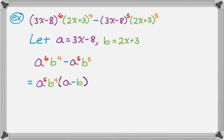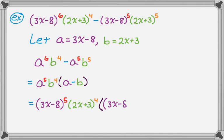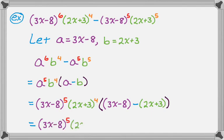Now I want to go back to the original, because a was really 3x minus 8 and b is really 2x plus 3. I replace every a and b with those values — always in parentheses to remember to distribute the negative sign. So the GCF becomes the quantity 3x minus 8 to the 5th times the quantity 2x plus 3 to the 4th. Inside the brackets: 3x minus 2x is just x, and negative 8 minus 3 is negative 11. And that's all I can do.